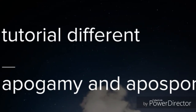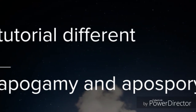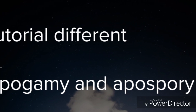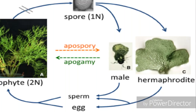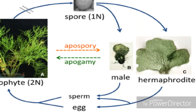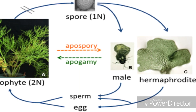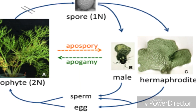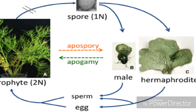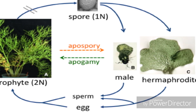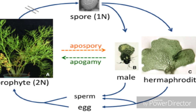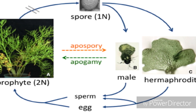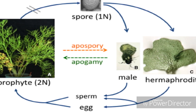Hi guys, today I'm going to tell you about some short and sweet but very important words that are casually found in France — that is apospore and apogamy. In both terms we casually know that either relates to gametophytic plant development or sporophytic plant development, but it is very confusing.